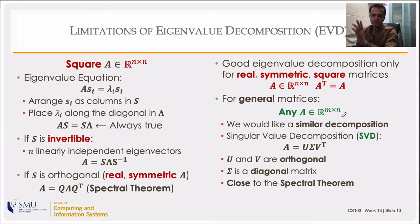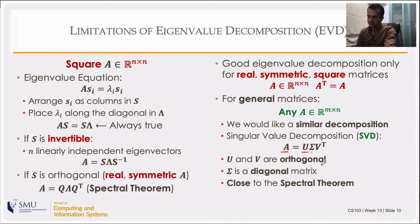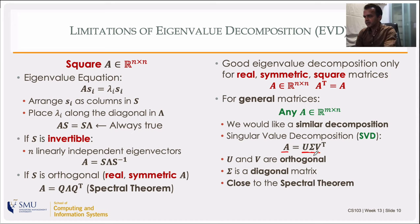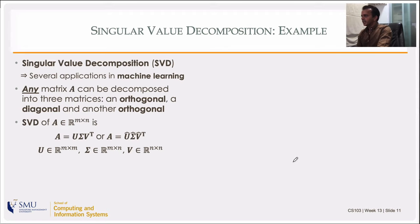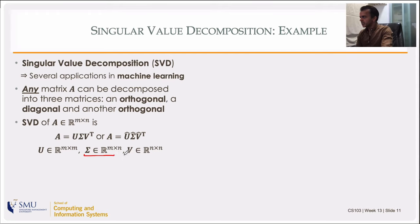For any general matrix A with m rows and n columns, we want to write A = UΣV^T, where U and V are orthonormal matrices and Σ is diagonal. This is close to the spectral theorem — instead of Q and Q you have two different matrices. Note that Σ has the same size as A: m rows and n columns, with main diagonal elements nonzero and everything else zero. U is m×m and V is n×n.